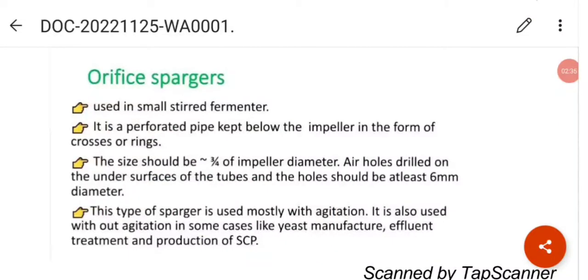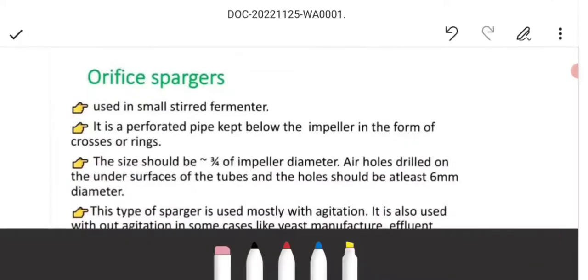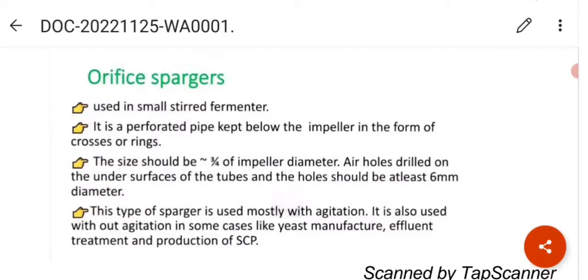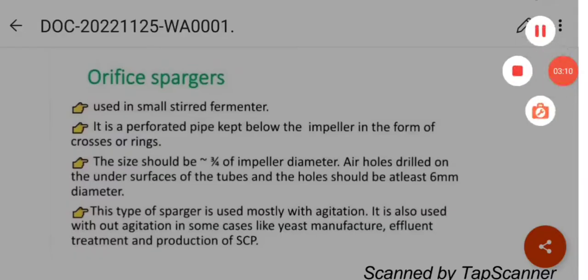The next spargers are the orifice spargers. They are used in the small stirred fermenters. It is a perforated pipe kept below the impeller in the form of crosses or rings. The size should be approximately 3 by 4th of the impeller diameter. Impeller means the agitator. Air holes drilled into the under surface of the tubes and the holes should be at least 6 mm in diameter.